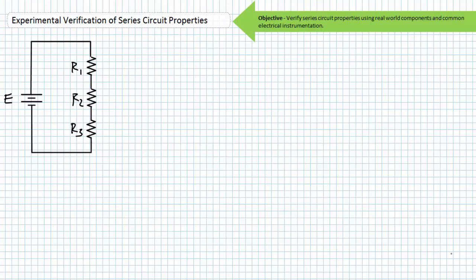I'm encouraging you to get involved and pause the lecture often to perform the required calculations. If you get lost, I'll guide you to the correct solution. This exercise should be especially satisfying because using limited observations and electrical theory you can predict reality. Real series circuit properties really do work like I've been telling you. First we'll build a basic three-resistor series circuit, measure voltage across each component and current through each component, then intentionally open and short components to observe the effects.